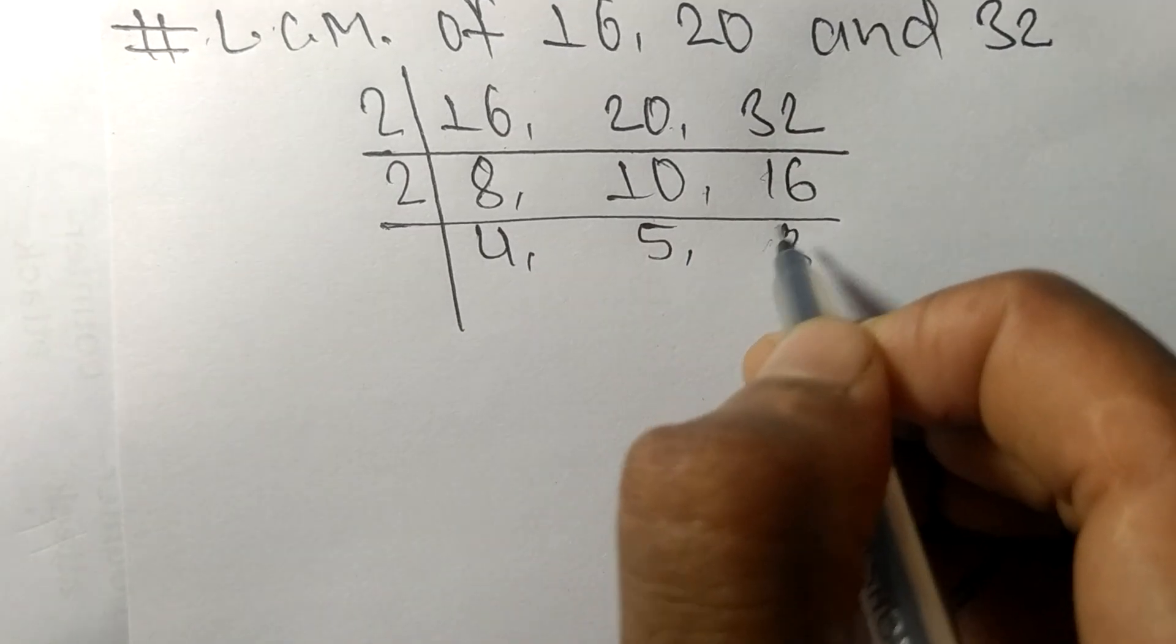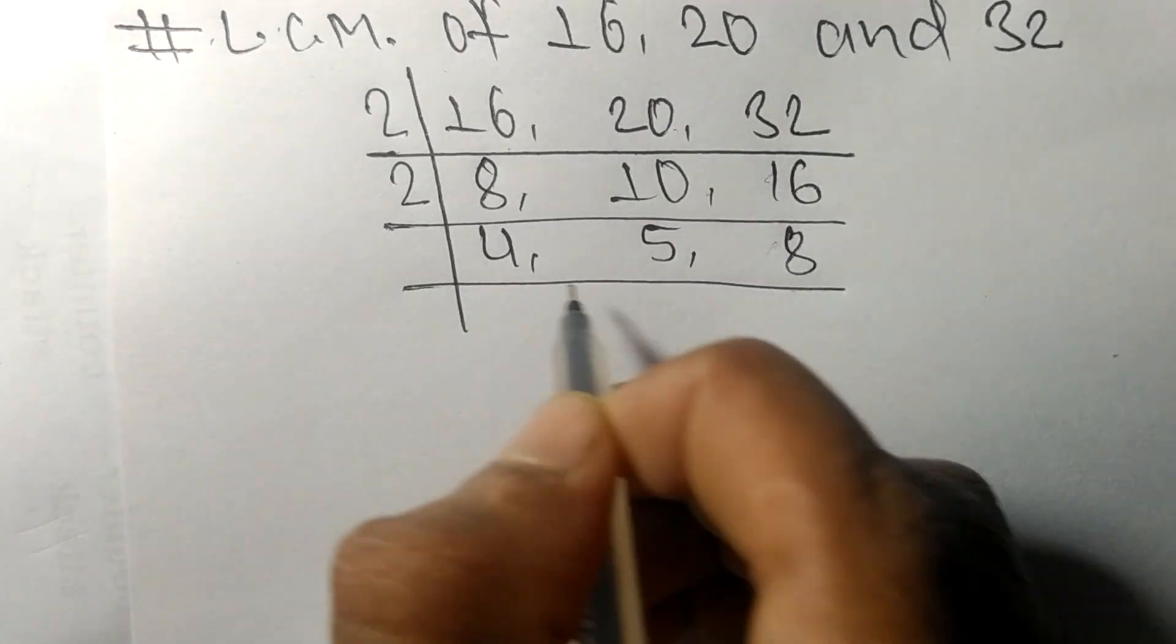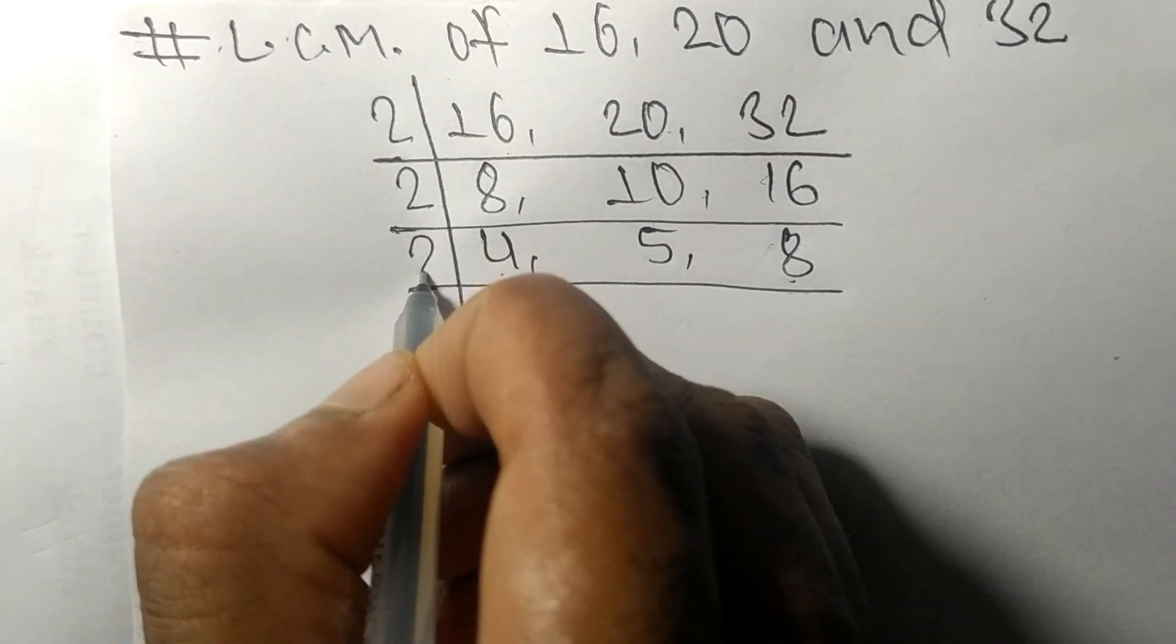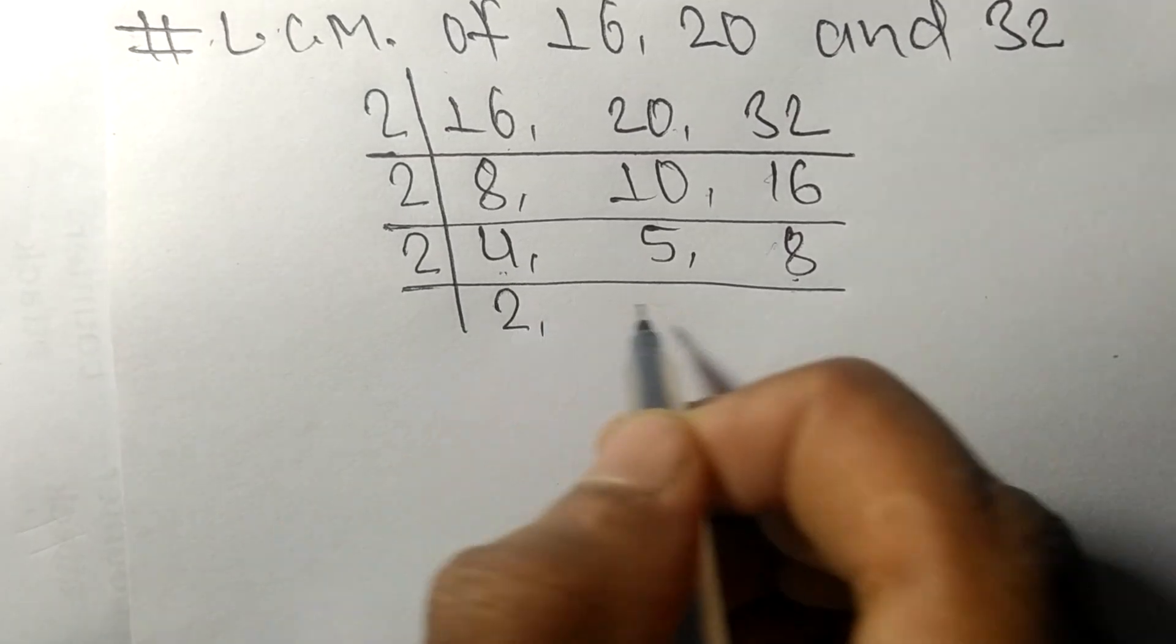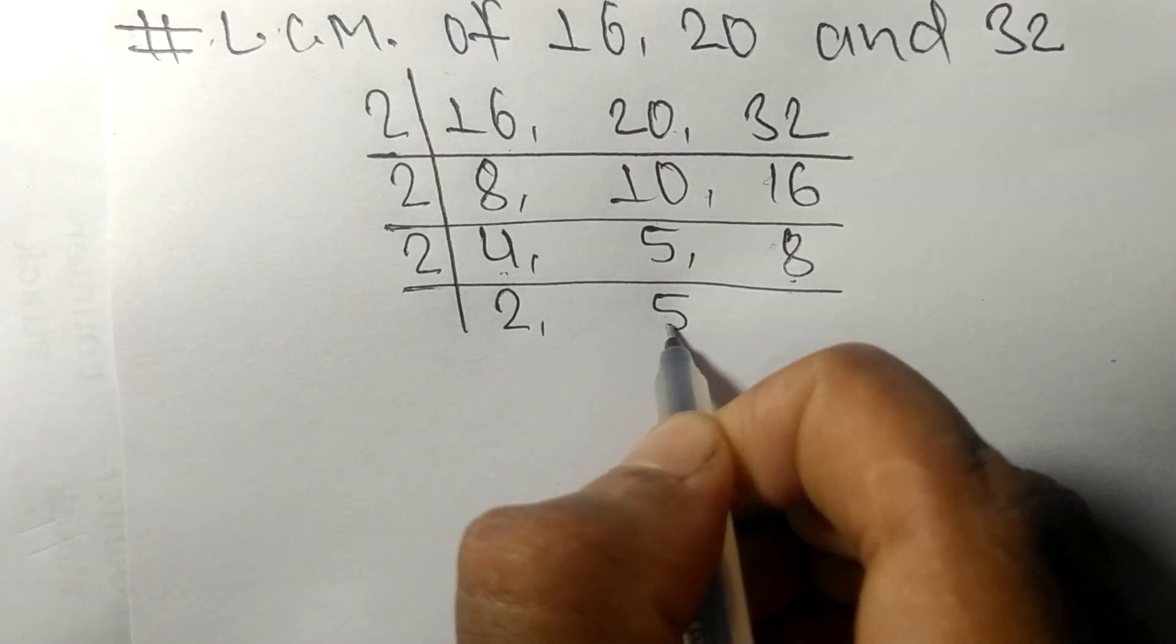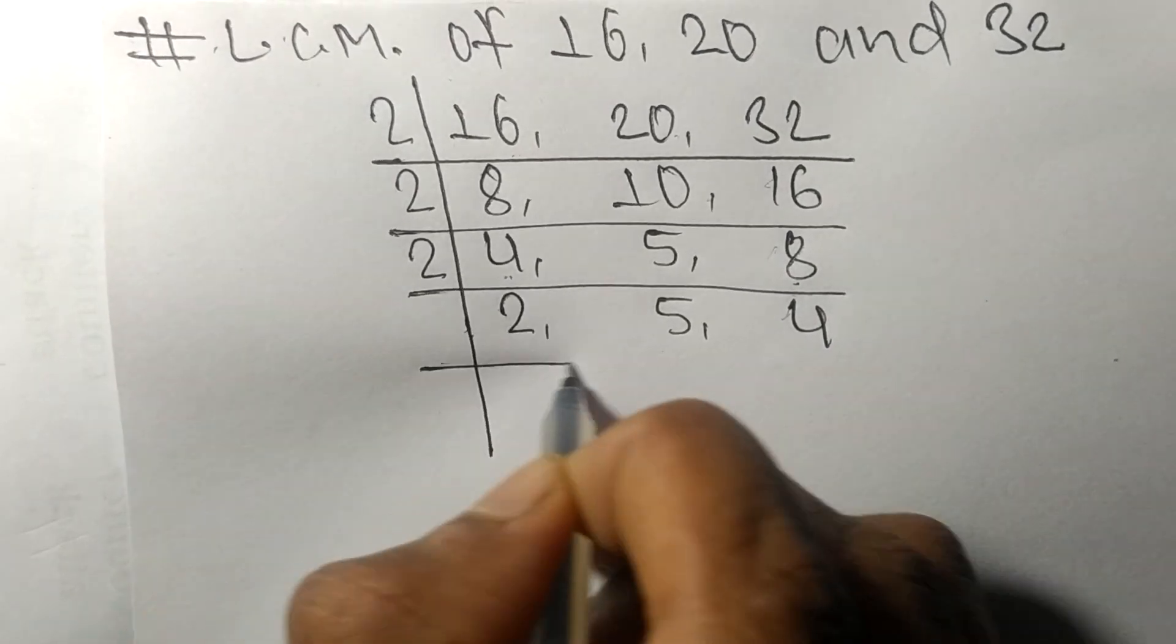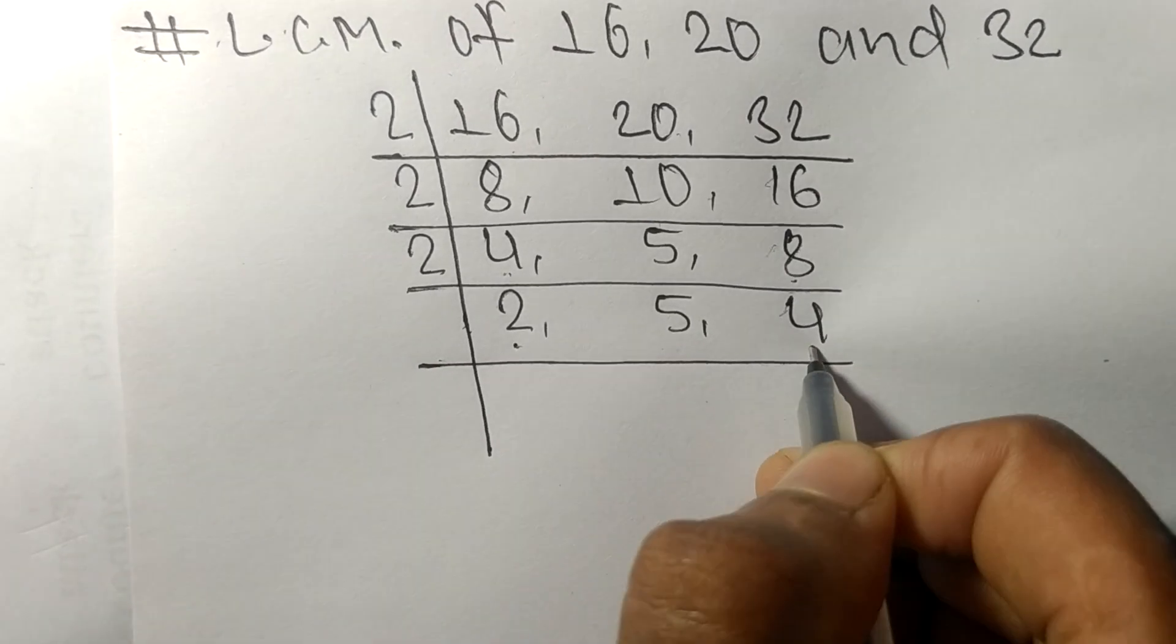So now 4 and 8 are exactly divisible by 2. 2 times 2 means 4, 5 is not divisible so it stays the same, 2 times 4 means 8. Now again, these 2 and 4 are divisible by 2.